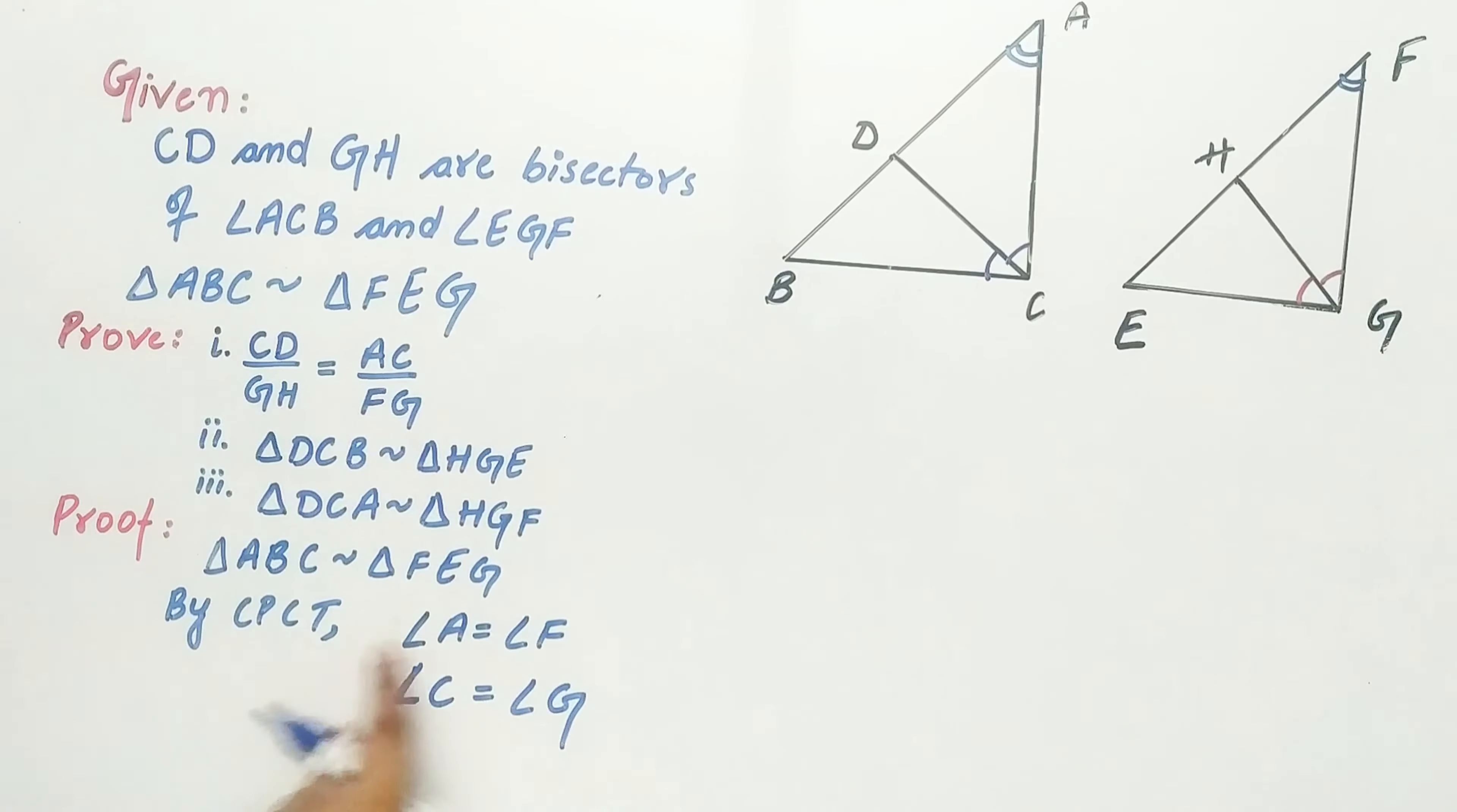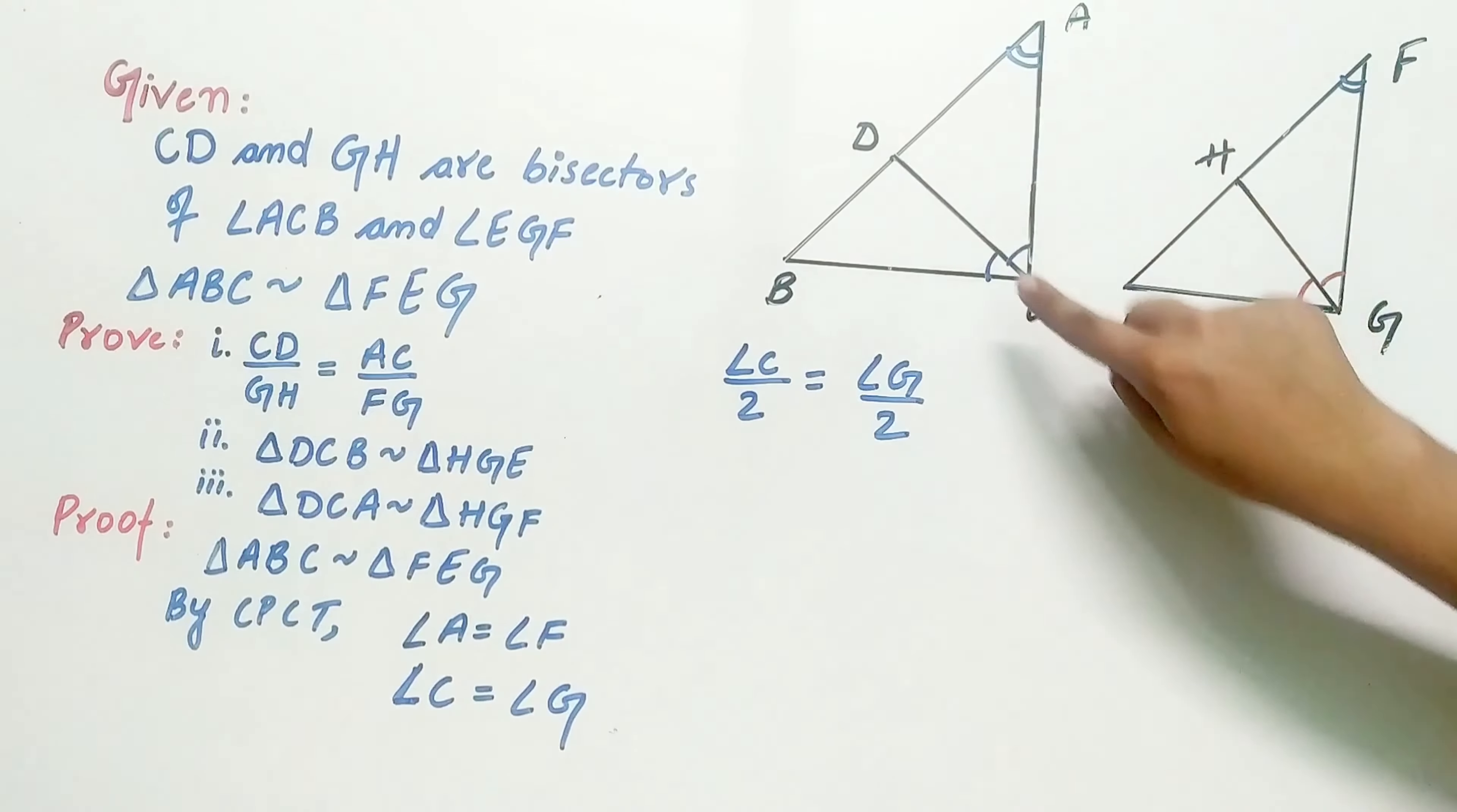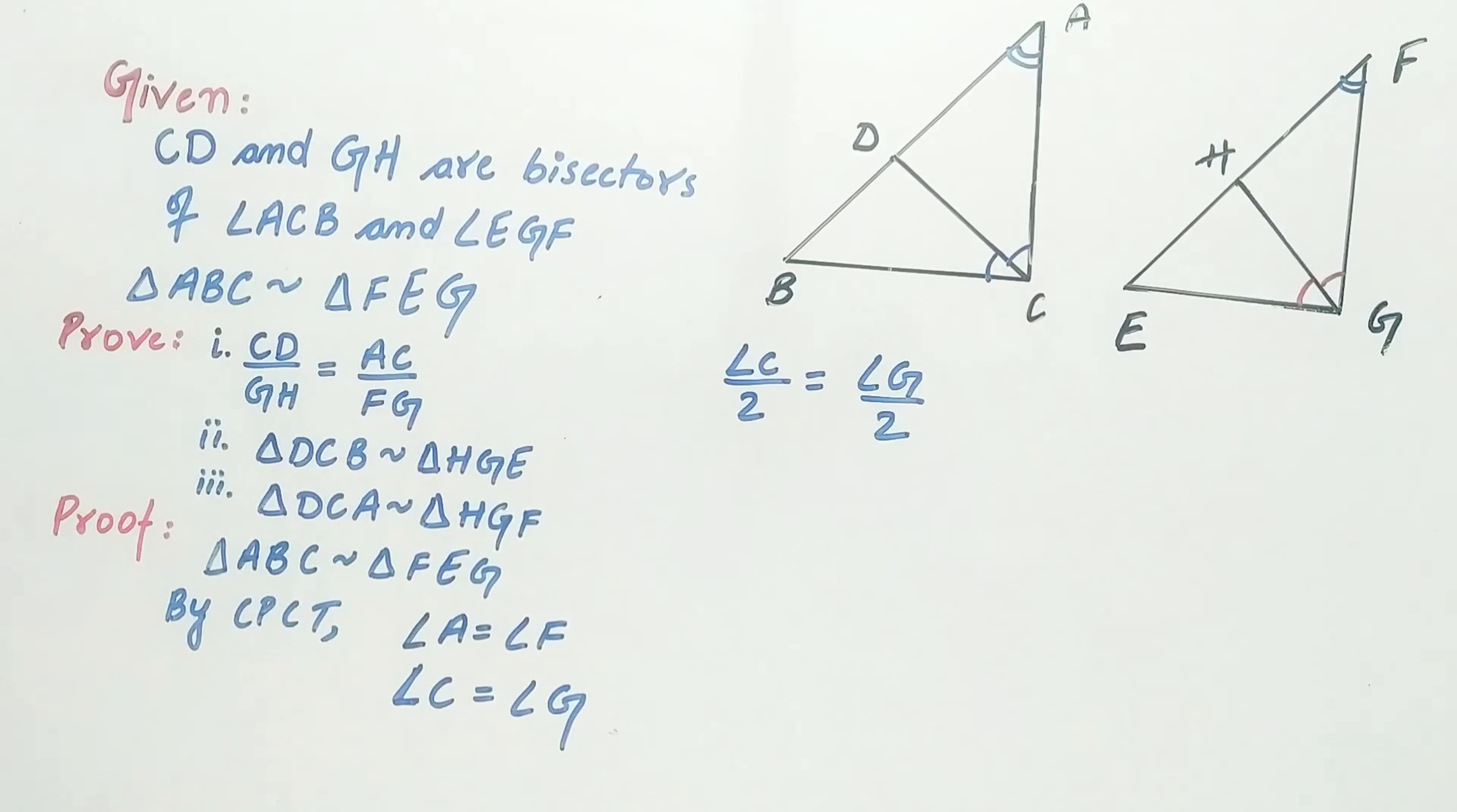Now divide the entire equation by half. Angle C by 2, that means half of angle C, is equivalent to angle DCA. Why? Because DC is the bisector of angle ACB. That means it divides the angle into two equal parts.